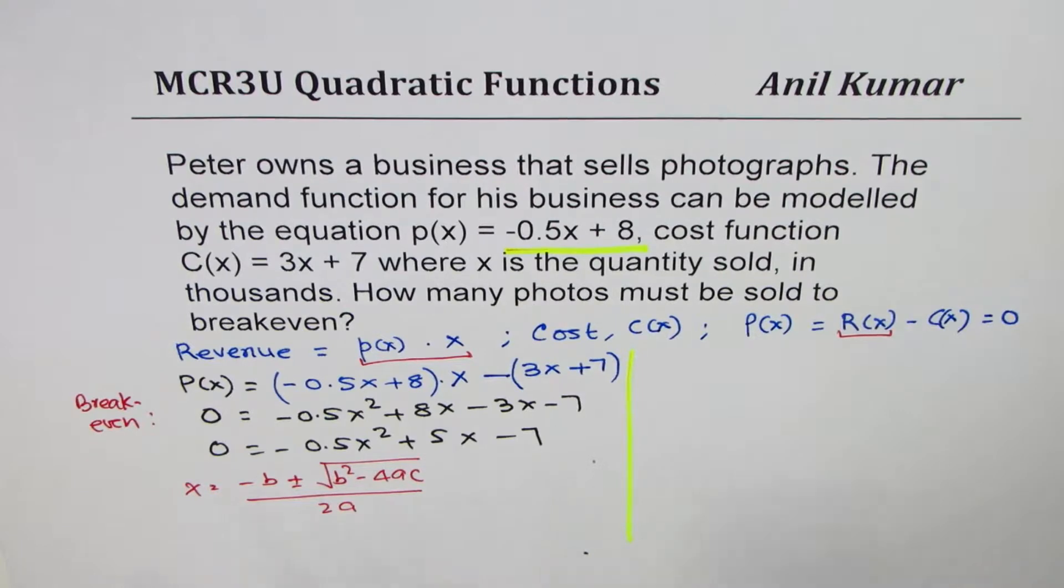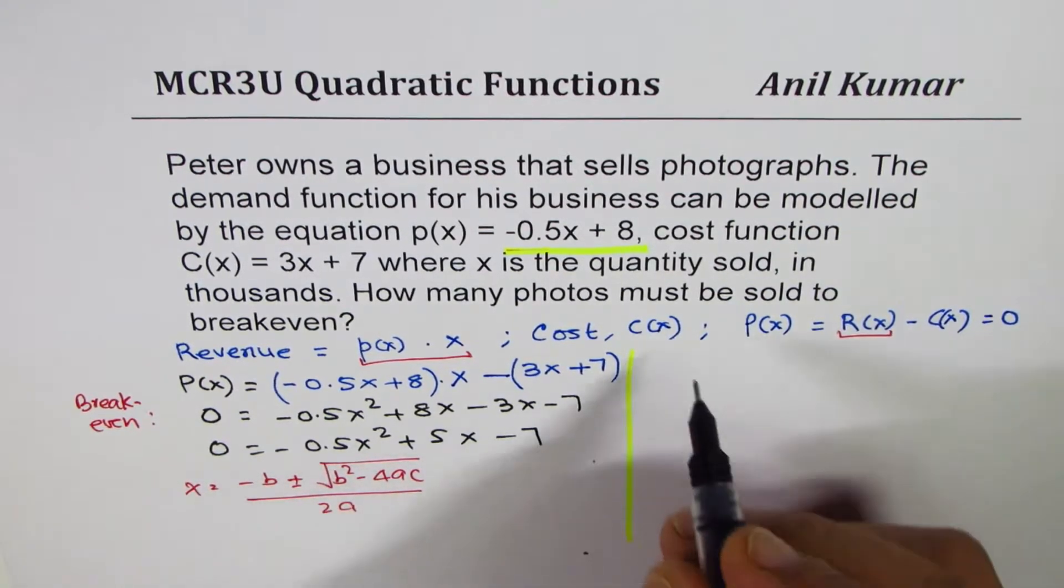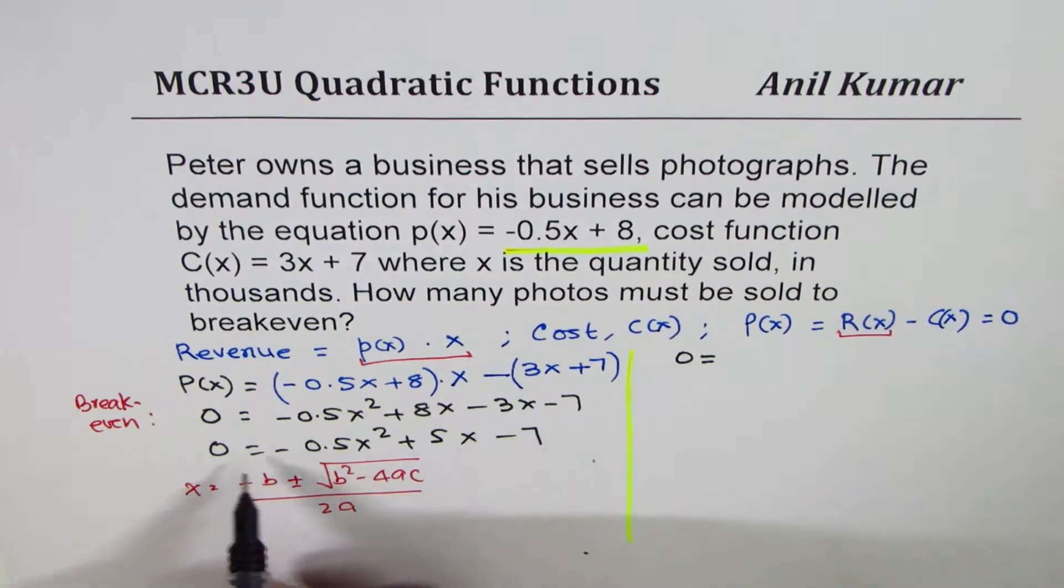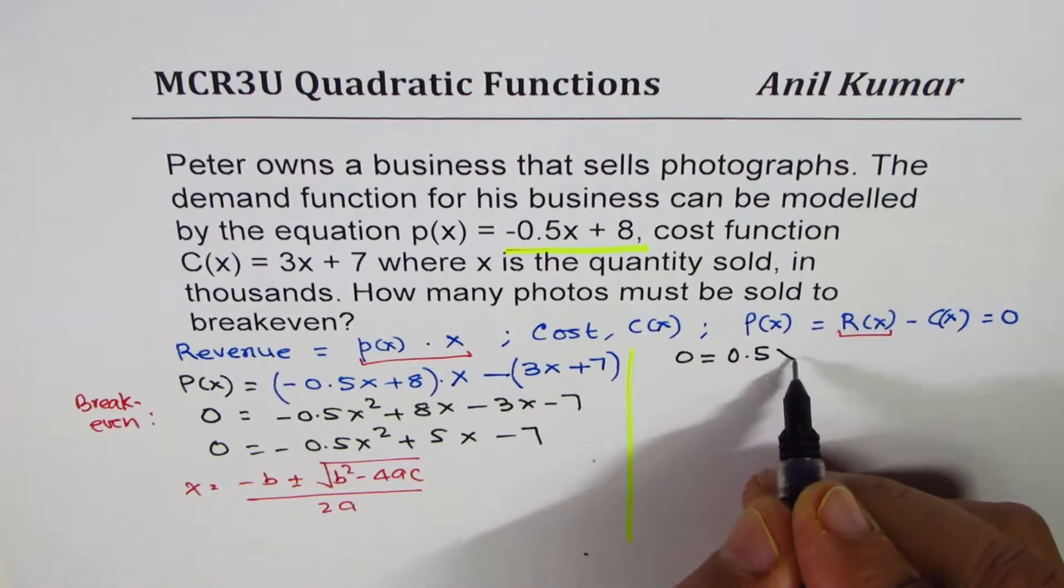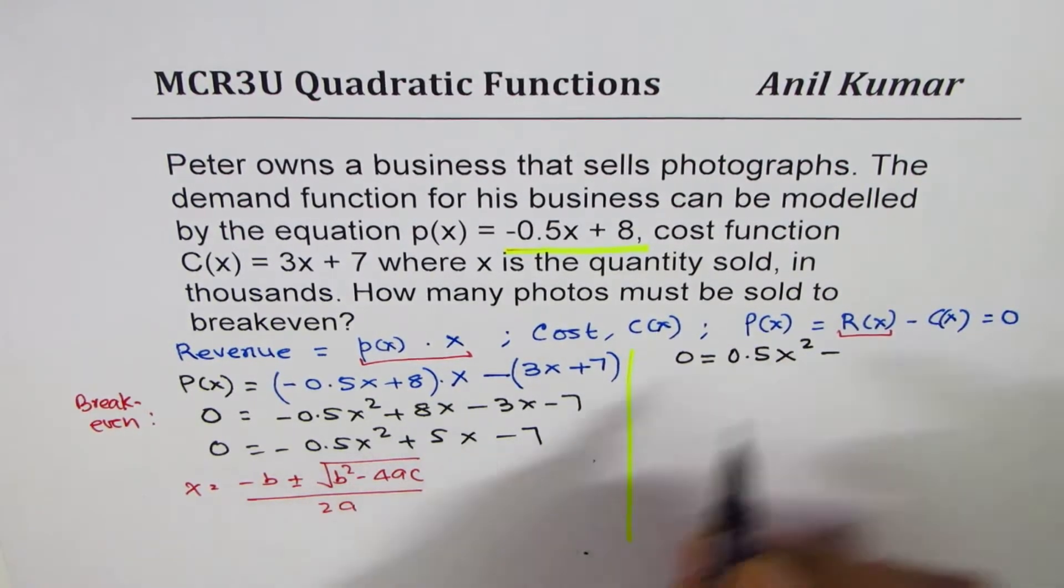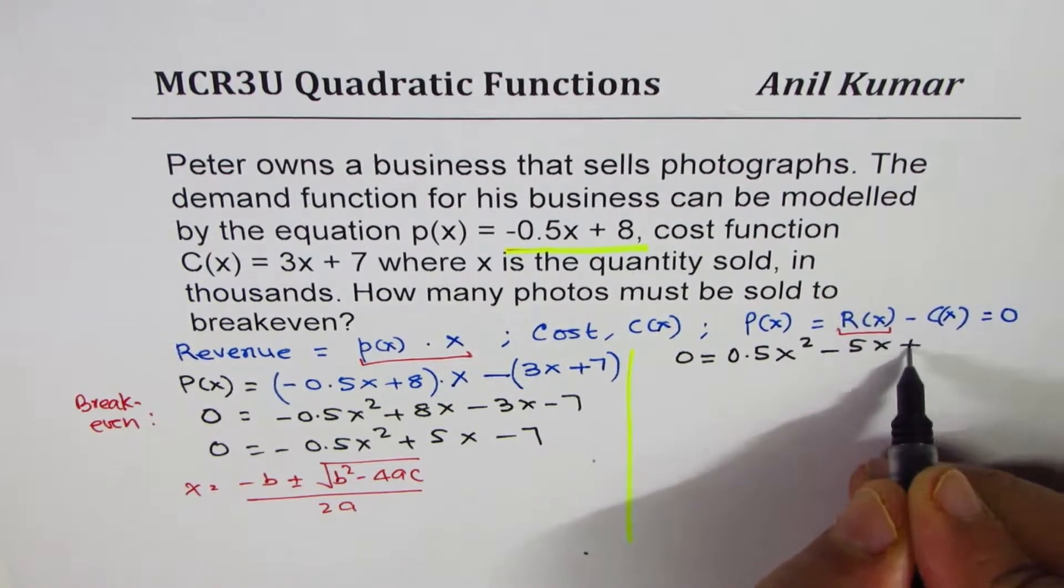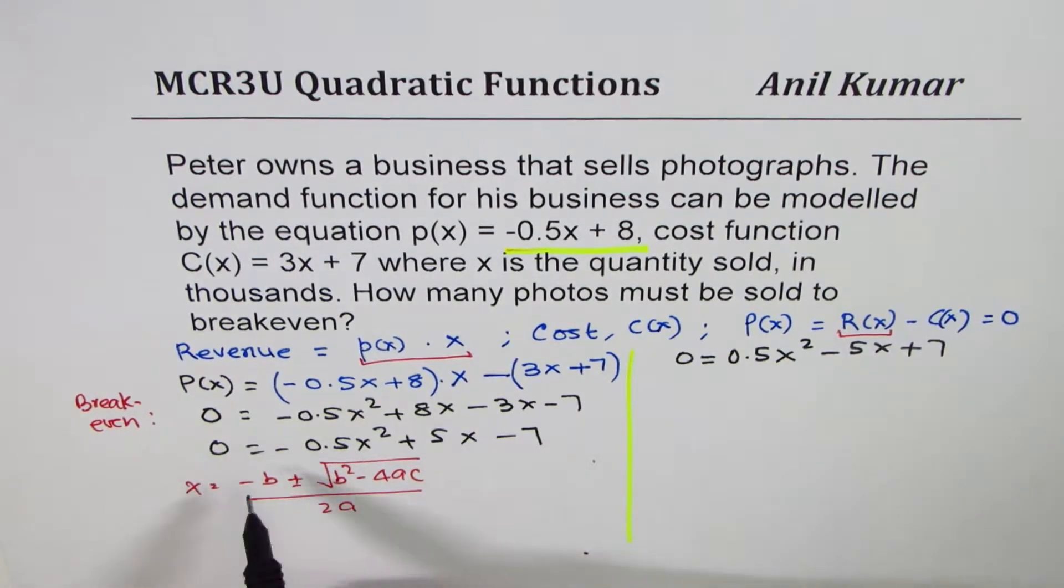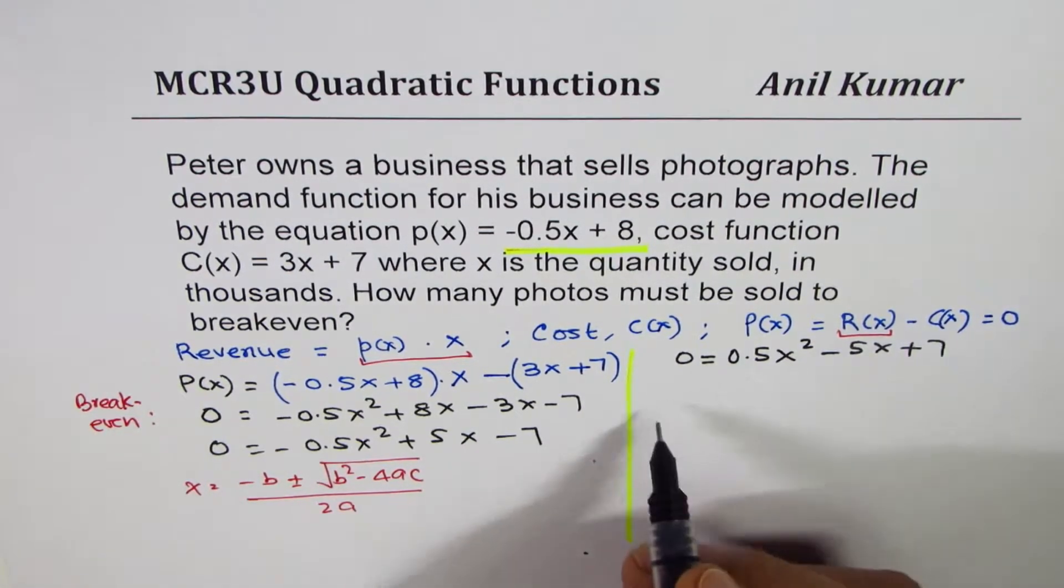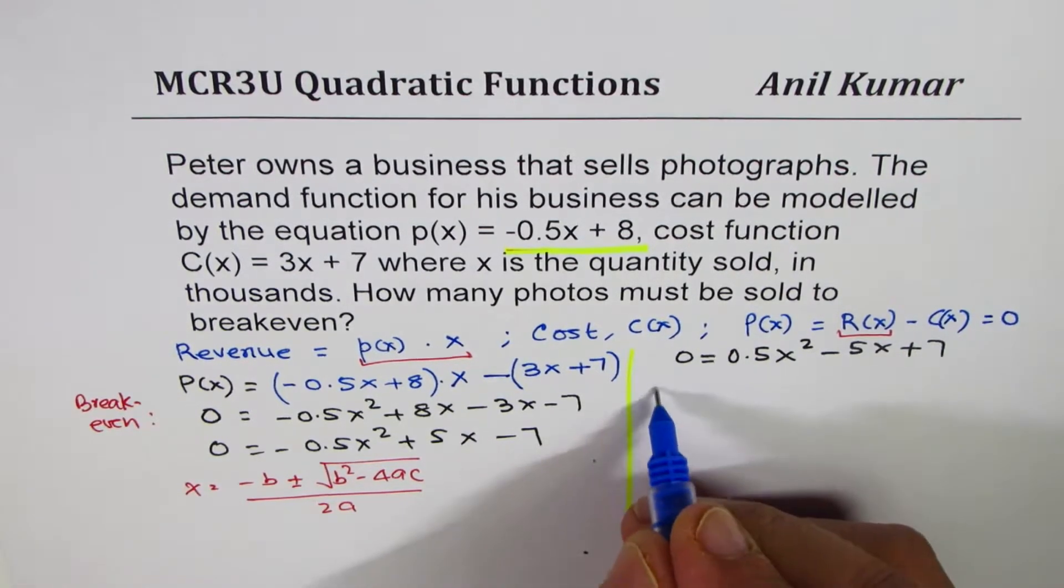So let's apply this formula and find the value of x. Now, I actually prefer to write all the equations with positive leading coefficient. So let me rewrite this equation as zero equals to, I'll multiply both sides by minus. This is not necessary. 5x plus 7, but I prefer to keep this positive. You can take all the terms to left side and do it. Now, what is x equal to? Let's calculate.